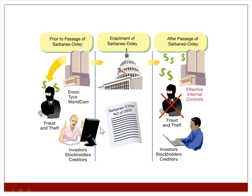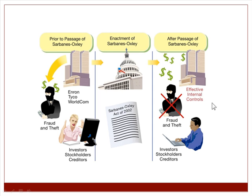Here's what it looked like before Sarbanes-Oxley. There was Enron, Tyco, WorldCom — a lot of fraud and theft happened. The investors, stockholders, and creditors were shocked because everyone went along like nothing had happened and they assumed controls were in place. Then came SOX in 2002, which initiated a huge amount of control that has to be in place. Now, theoretically, after SOX, there are effective internal controls to prevent fraud and theft and make stockholders happy.